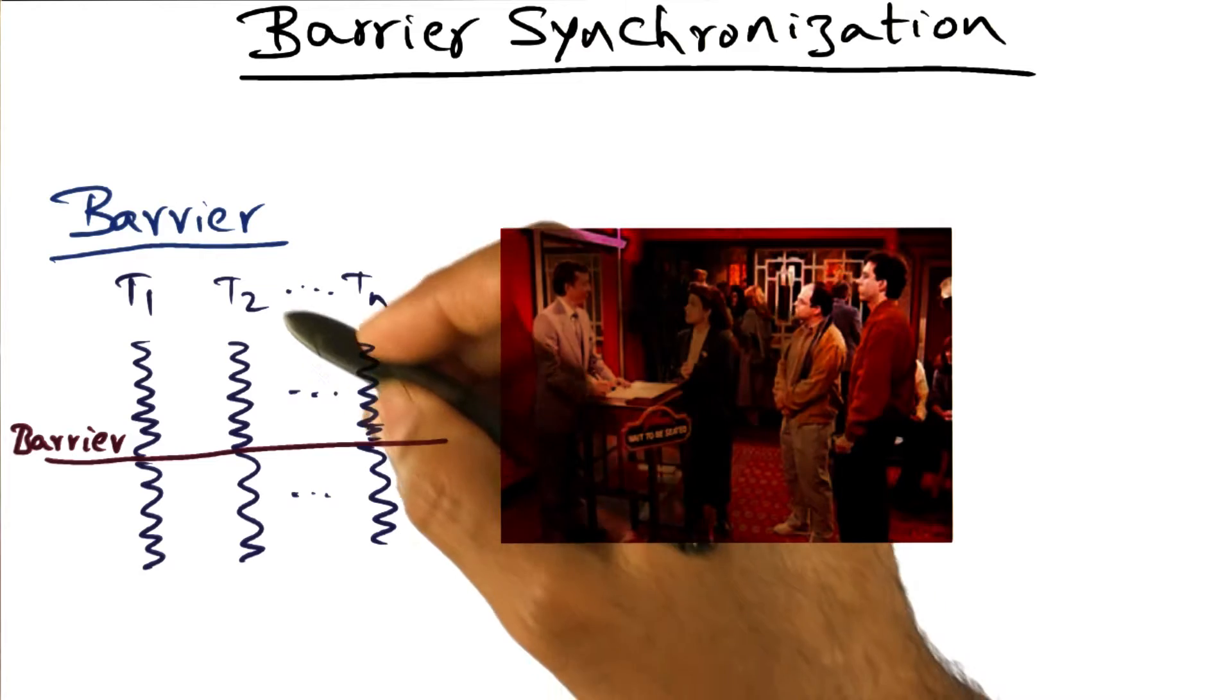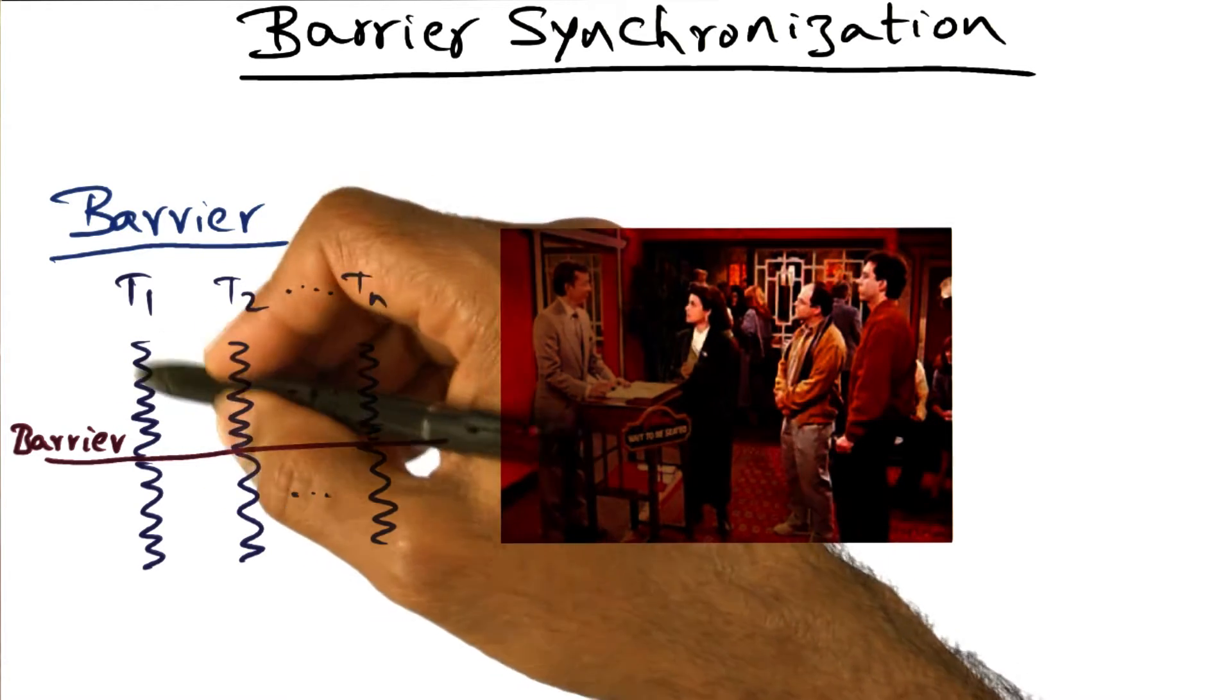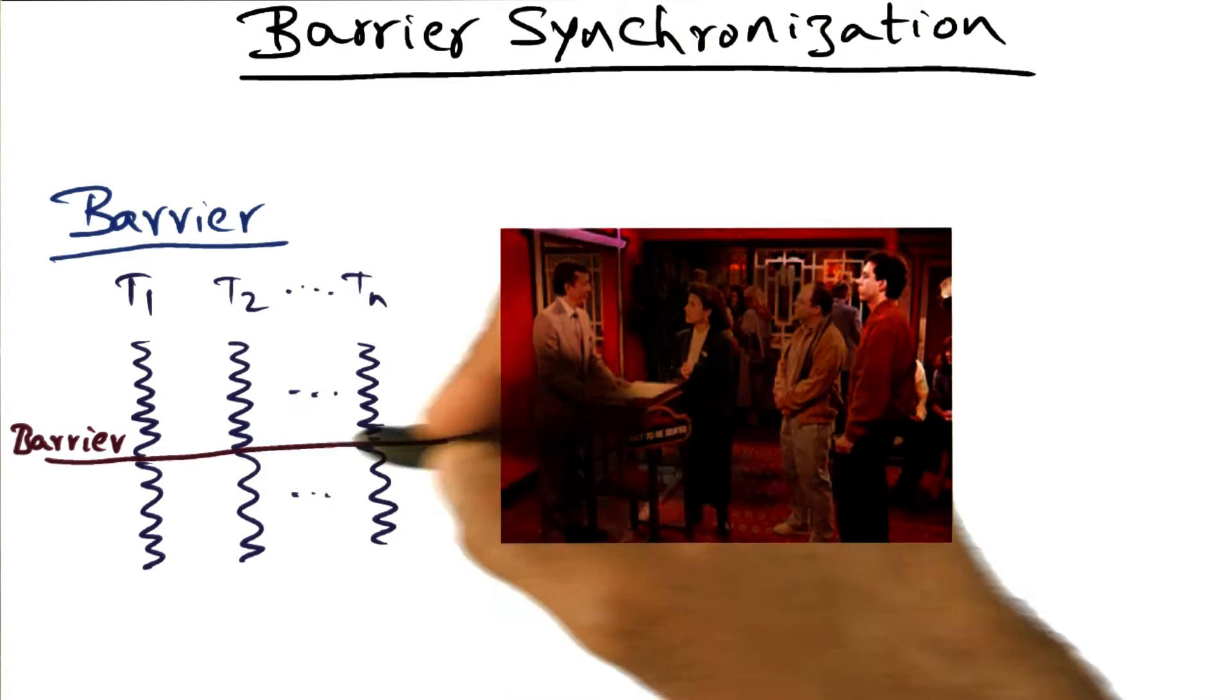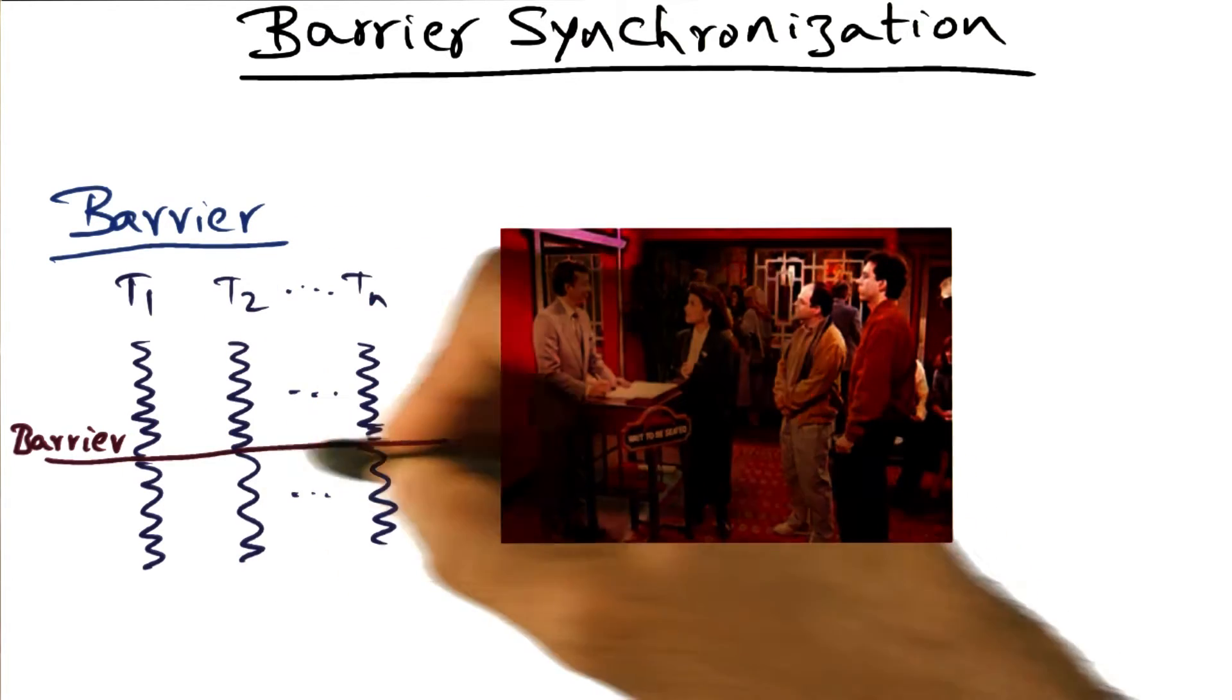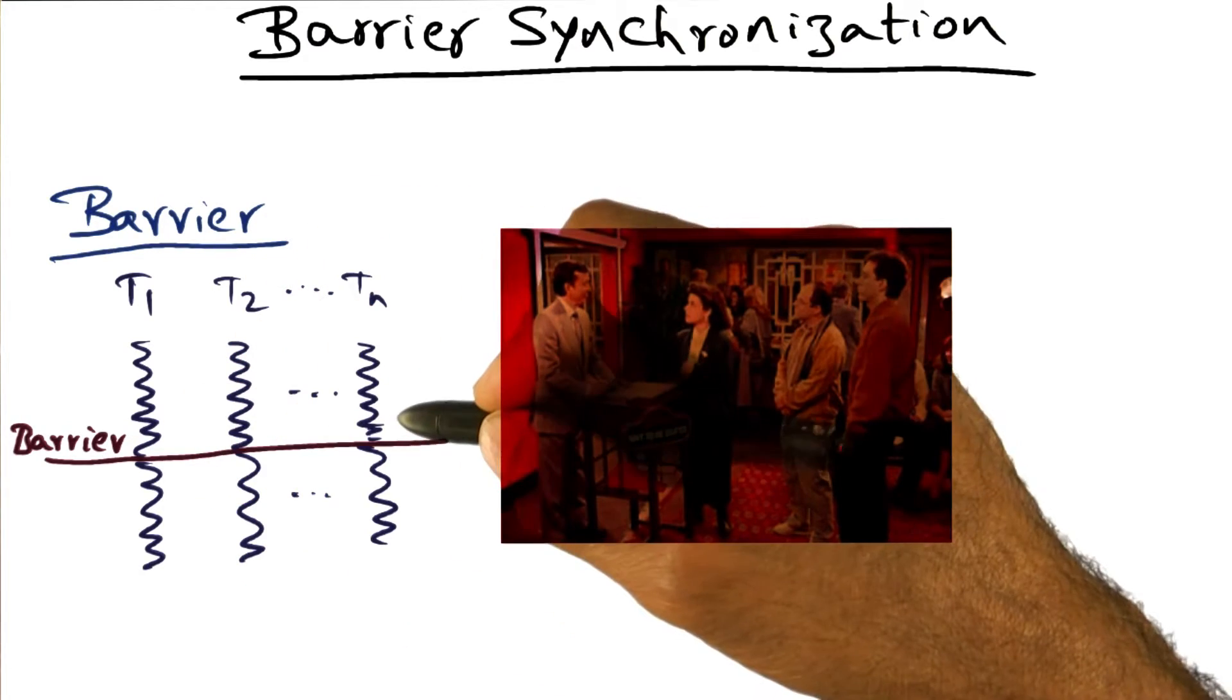Just to refresh your memory about the barrier, the barrier synchronization works like this: you have a bunch of processors, and they all need to know where they are with respect to each other. They want to reach a barrier and wait here until everybody has arrived at this barrier.